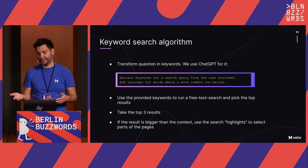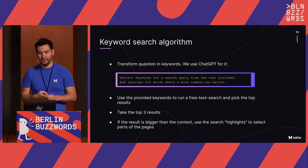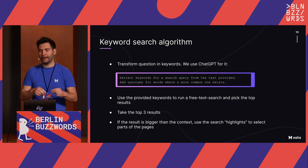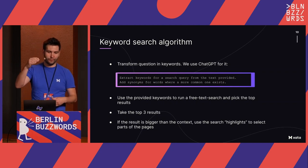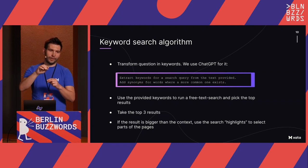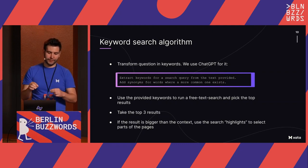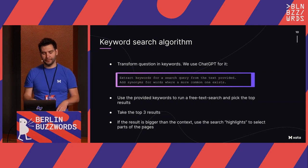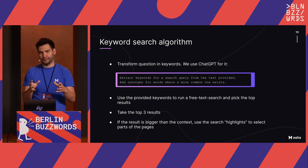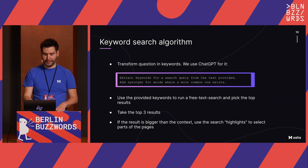Then we do the search and take the top three results — that's pretty arbitrary, but that's what we do. We use the highlights because the resulting pages might be longer than what we can put in context. So we look at where the highlights are from the search, and select a few paragraphs at the top or bottom of the page. We provide all this as context and send it to ChatGPT.